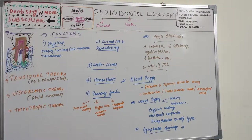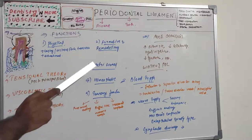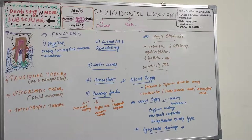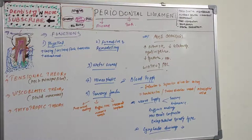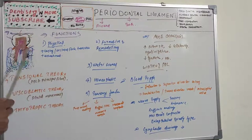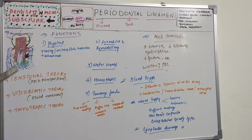The nutritional function: the PDL supplies nutrients to cementum, bone, and gingiva via blood vessels, which provide anabolites and remove catabolytes. The homeostatic function refers to the PDL's adaptability to rapidly changing applied forces and its capacity to maintain a constant width throughout life. Cells of the PDL can synthesize and resolve extracellular substances of connective tissue, alveolar bone, and cementum.